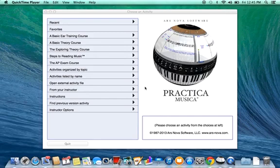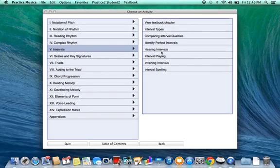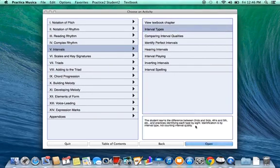Once you've opened the program, you will need to select the Exploring Theory course, then select Chapter 5 Intervals, and then select Interval Types, and then click Open.